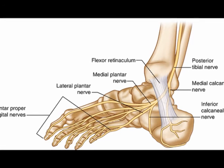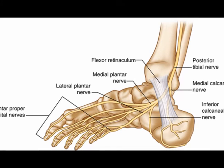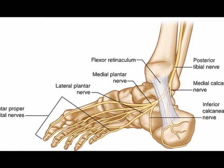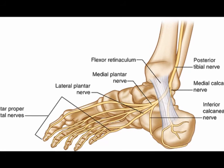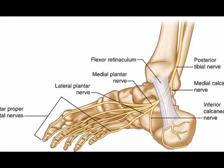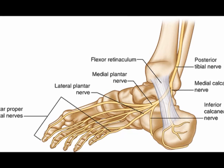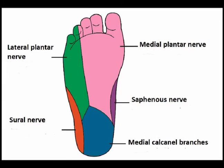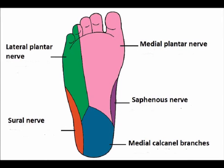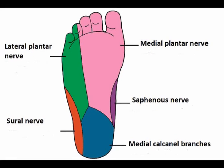The lateral plantar nerve travels obliquely to the lateral side of the foot, deep to the flexor digitorum brevis and superficial to the quadratus plantae muscles. This nerve gives off a deep branch supplying the deep muscles of the foot, as well as a superficial branch as it continues coursing laterally. The superficial branch terminates as common and proper plantar digital nerves supplying the fourth and fifth digits.